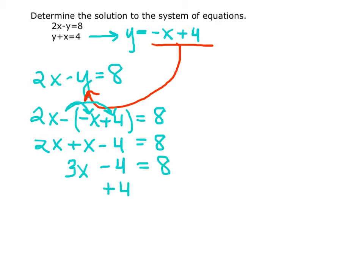Adding 4 to both sides, 3x is left on the left and 12 is on the right. Divide both sides by 3 and x equals 4.